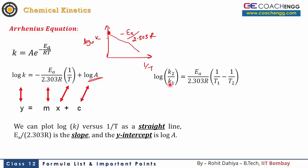When two different rate constants at two different temperatures are known, we can use: log(k2/k1) = (Ea/2.303R) × (1/T1 − 1/T2). Plugging both values into the Arrhenius equation and dividing them causes the frequency factor A to cancel, and taking the log of both sides gives this result.